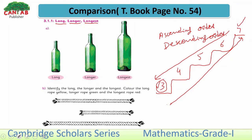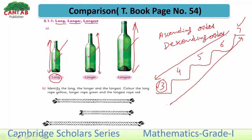Similarly, we have a small-length bottle — we call this the long bottle; this one in the middle is longer, because it is greater than the first bottle but smaller than the last bottle. The last bottle is the longest, as its length is the greatest. The middle bottle's length is longer, and the first one is simply long.